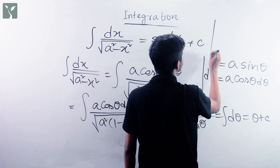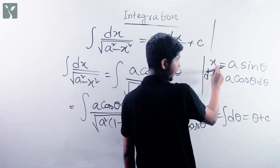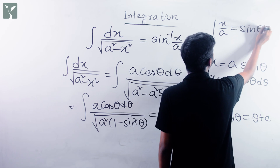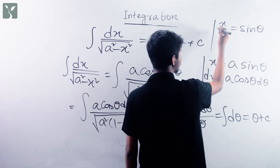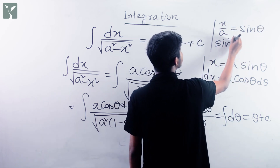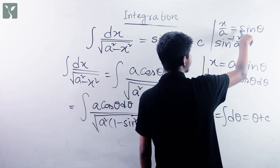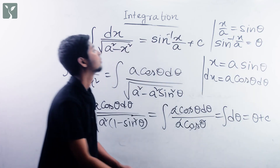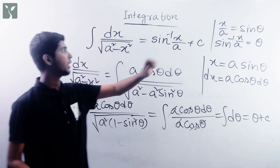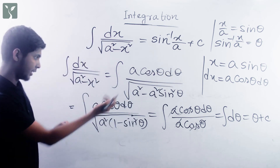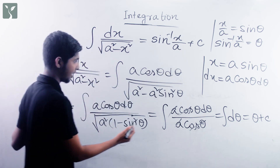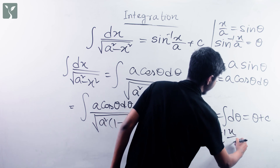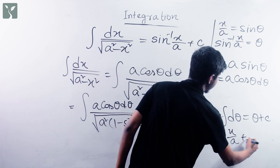So the integration of a cos theta d theta divided by a cos theta simplifies to integration of d theta, which equals theta plus c. The theta value is sin inverse x by a, since sin inverse of sin theta is theta. So the result is sin inverse x by a plus c.